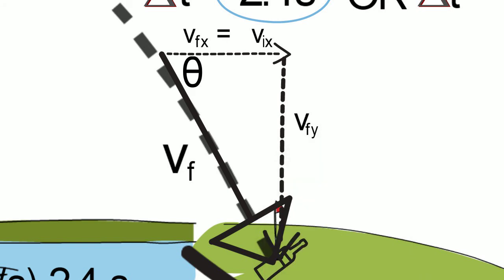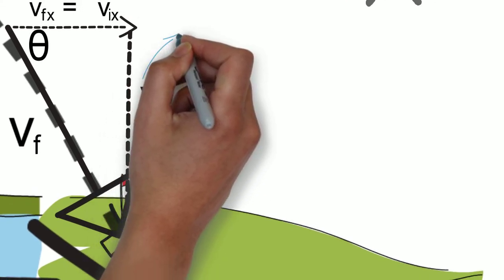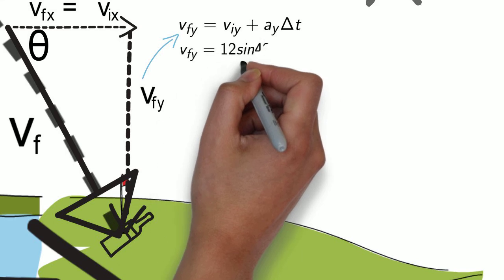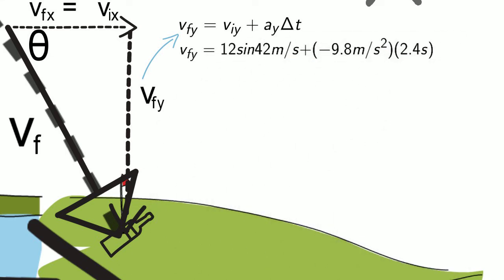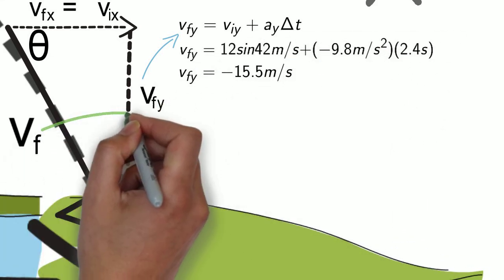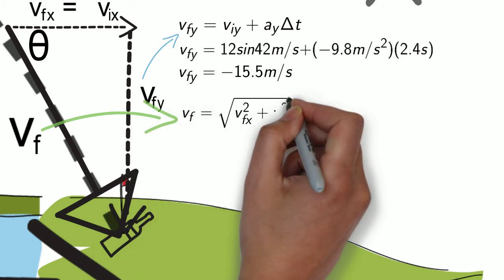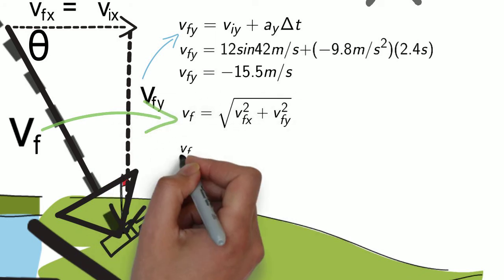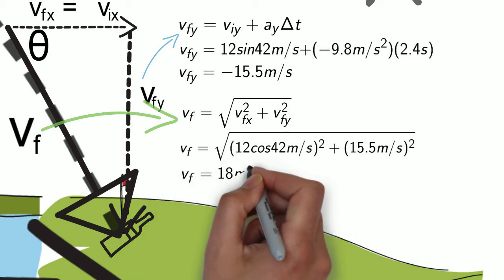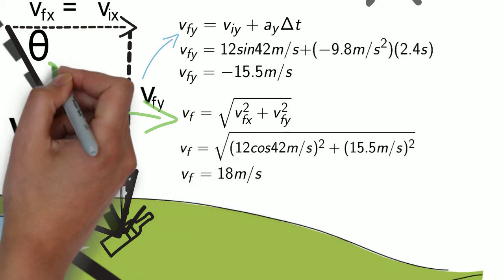But our final velocity in Y will be different. So we go back to our equations for uniform acceleration to determine the final velocity in Y as 15.5 meters per second down. Then using Pythagoras and tangent, we figure out that the final velocity, or the hypotenuse of our triangle, is 18 meters per second, 60 degrees below the horizontal.